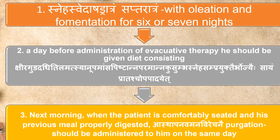Summary of treatment: Sneha Sweda for 6 or 7 nights (Shadratram, Saptaratram). A day before evacuative therapy, give diet of Kshira, Gooda, Dadhi, Tila, Matsya, Anuba Mamsa, Pishtanna, Paramanna, and Kusumpa Sneha in morning (Saayam) and evening (Pradaha). Next morning, when the patient is comfortably seated and his previous meal properly digested, Asthabanam, Vamanam, and Virechanam (purgation) should be administered to him on the same day.